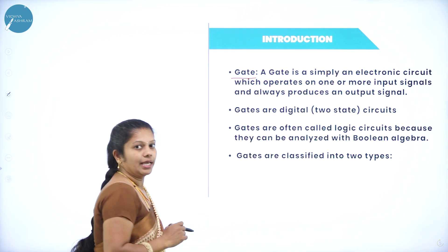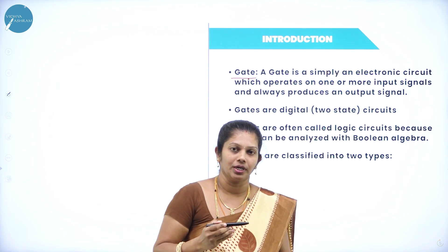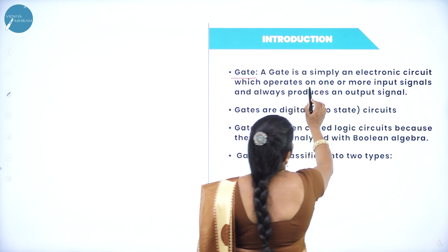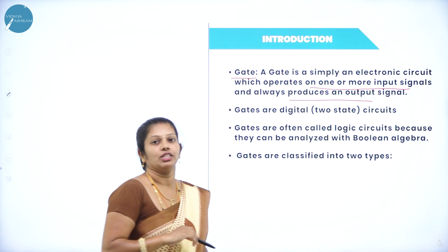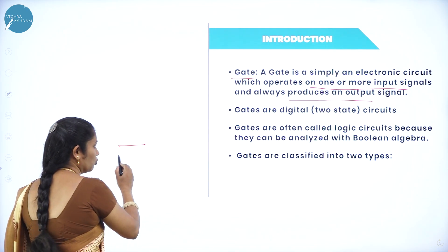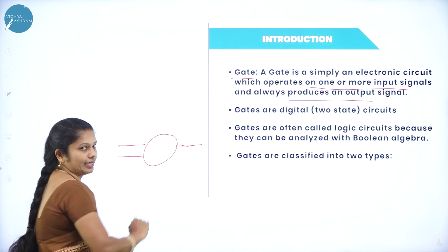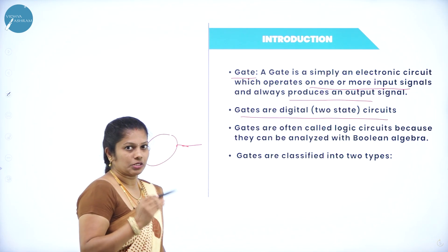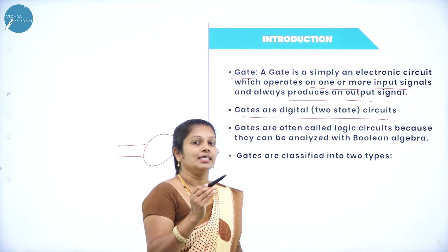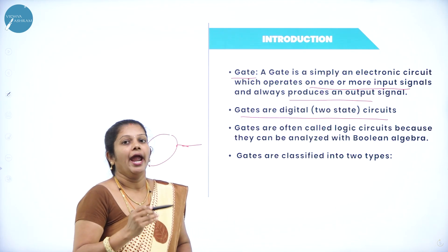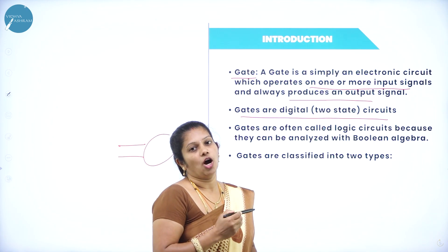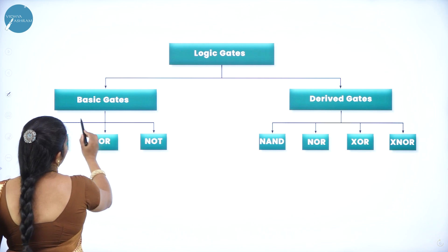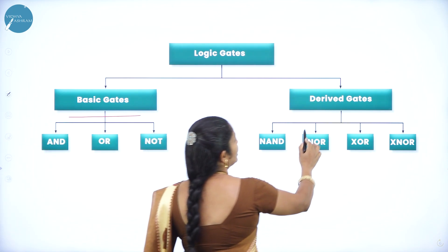A gate is simply an electronic circuit — it is a digital circuit. It takes one or more input signals and produces one output signal. It may take one input or more than one input, while producing only one output. Gates may be basic gates or derived gates. Logic gates are mainly used in Boolean algebra.